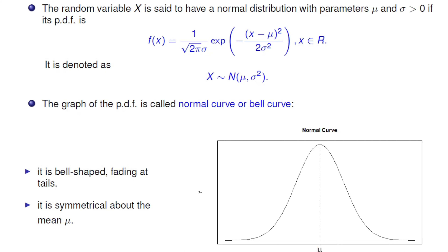The graph of this PDF is called the normal curve or bell curve. It is bell-shaped, as you can see from this curve — fading and decreasing at the tails. It is also symmetrical above the mean, so the center is at mu.